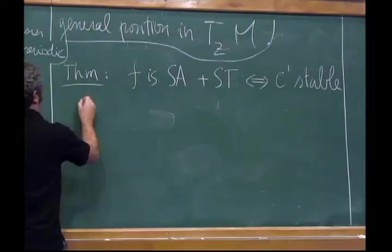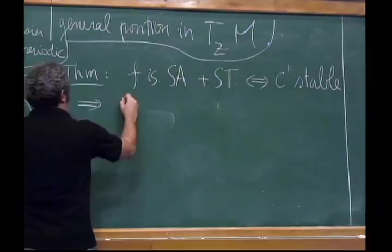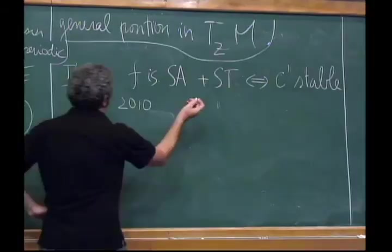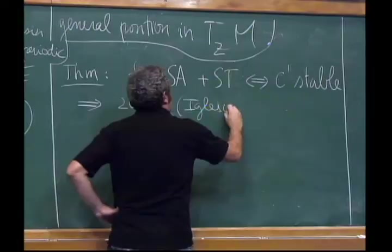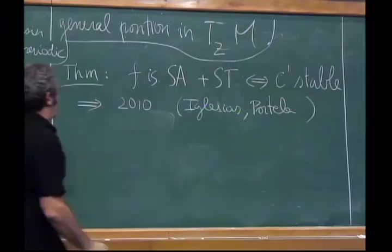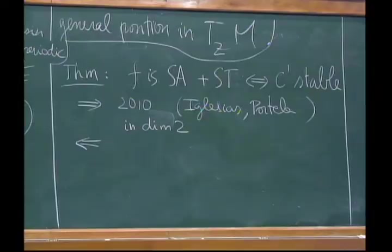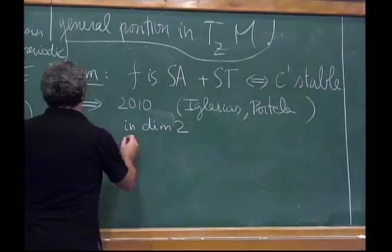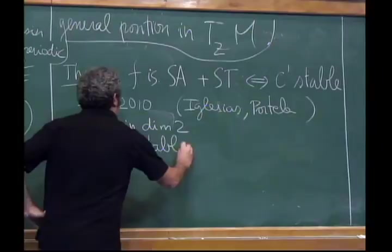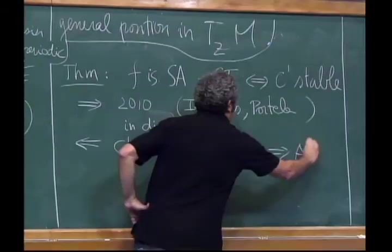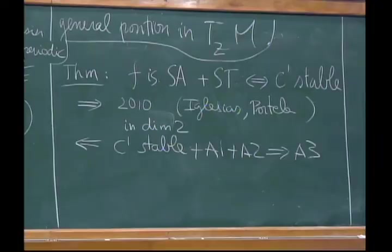This theorem, and specifically the C1 stable direction, was done around 2010 by my colleagues Iglesias and Portela, who proved this condition in dimension two. The other parts were already known: Przytycki proved that C1 stable plus A1 plus A2 implies A3, so this condition is necessary for stability.